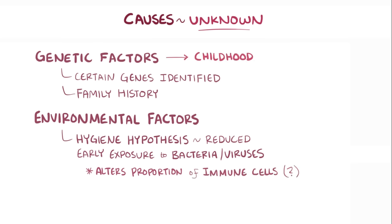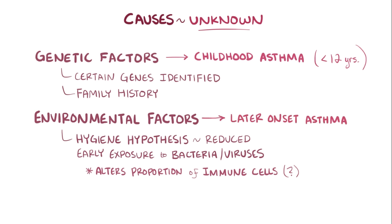In general, causes of childhood asthma diagnosed before age 12 are thought to be due to a stronger genetic influence, whereas later onset asthma is more likely to be due to environmental factors.